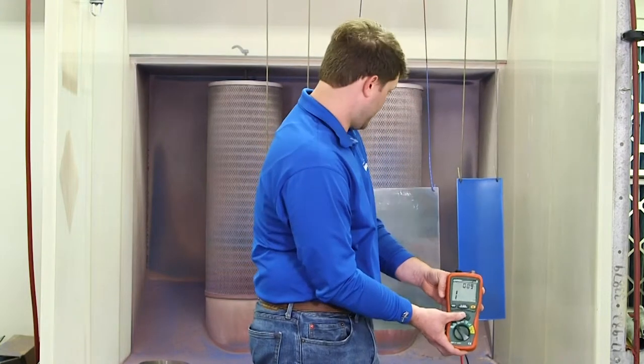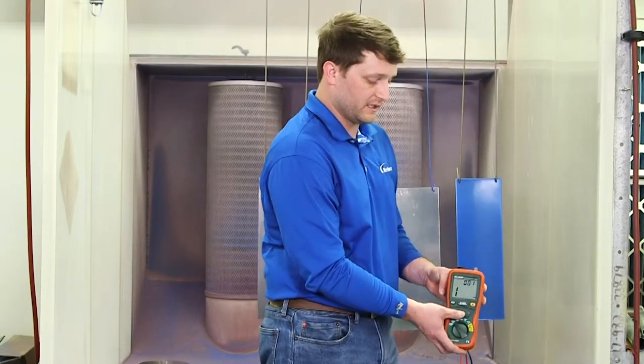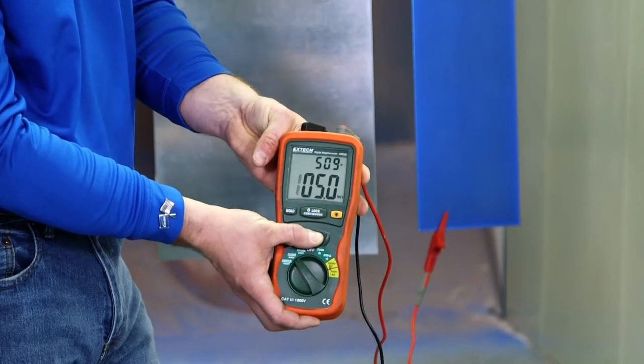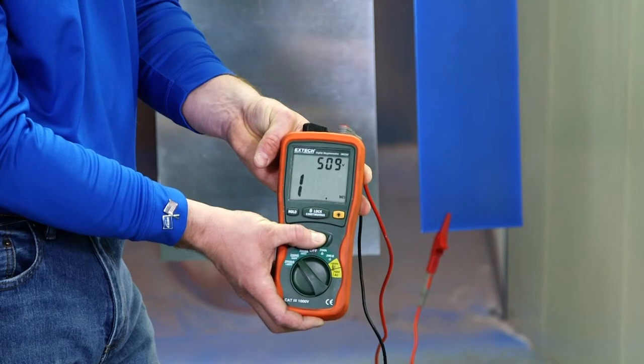For the third setup we have a coated piece of metal that's going to act as an insulator, so this should read out of range as well. This is showing out of range.